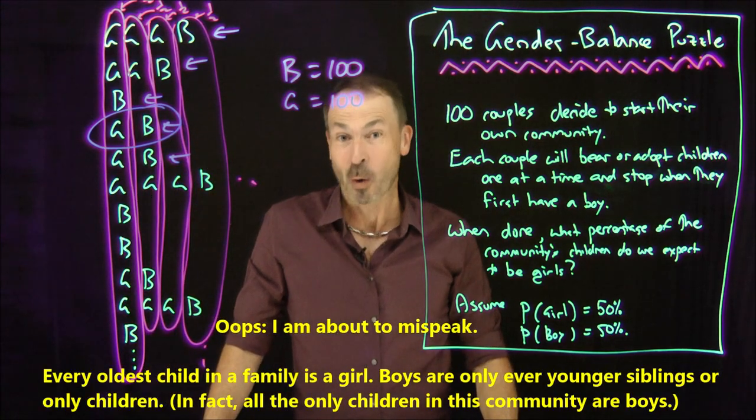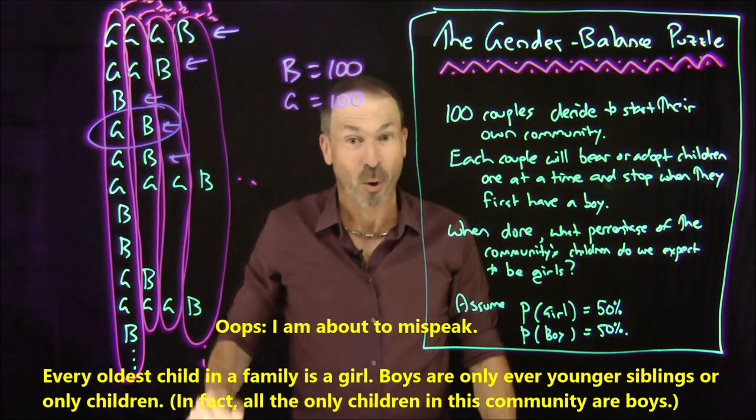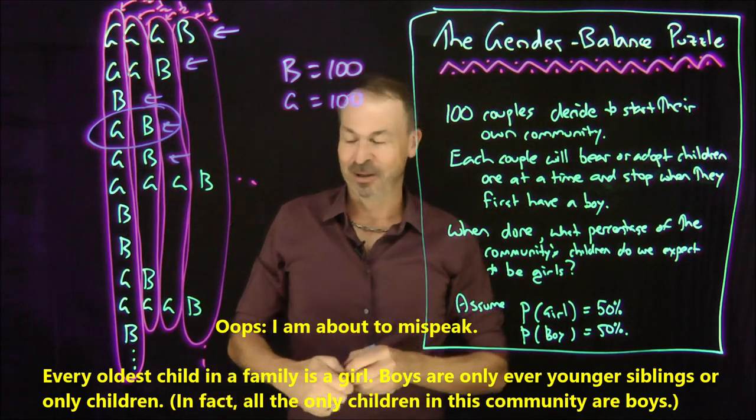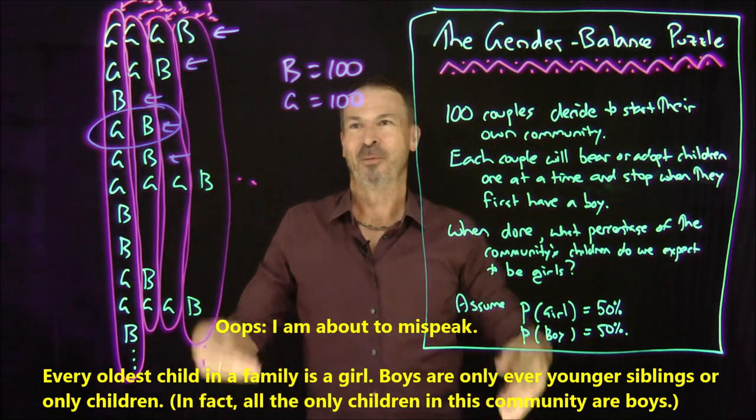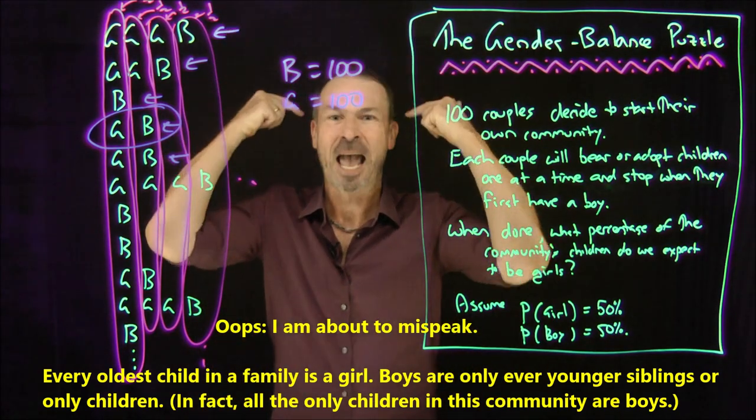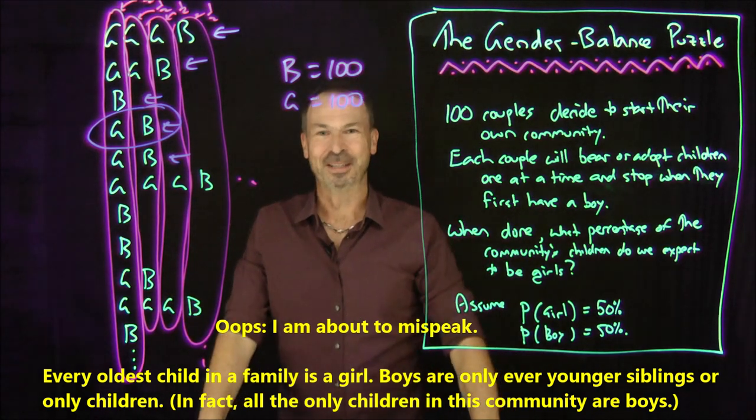Now the thing is, the oldest child will always be a girl, you'll never have a boy as a younger child, but we do expect, on average, to be gender balance going on for this community after all. We will see exactly 100 boys, and on average, we will see 100 girls. Wow.